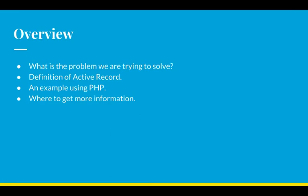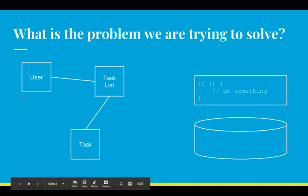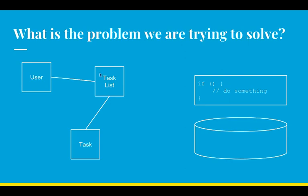Then we'll briefly define active record, do an example using PHP, and finally look at where to get more information. So what's the problem we're trying to solve? When Peace and I were discussing the software this morning, he showed me a design he'd created — basically an entity relationship diagram like what you see on the left here. This kind of entity relationship diagram or domain model is a really good way of doing software design — something you can talk to both technical and non-technical people with, and that both groups can understand.